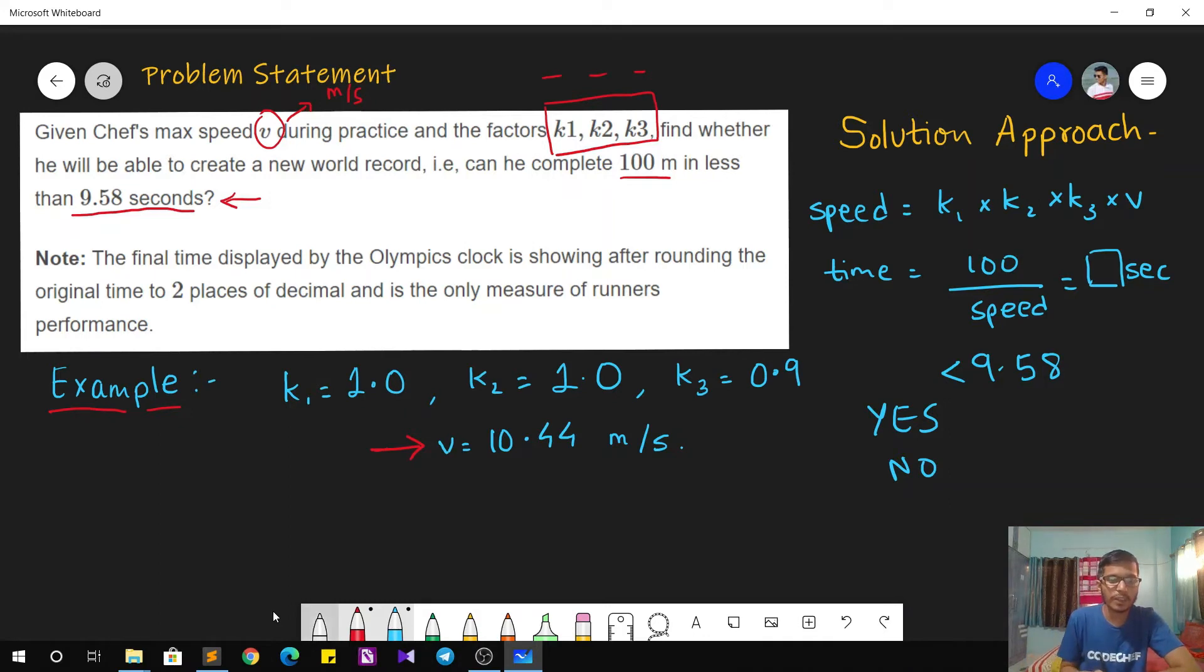So let's calculate the same for this test case. Over here we have K1 as 1, K2 as 1 and K3 as 0.9. So the speed in the actual race will be nothing but 1 into 1 into 0.9 into 10.44. If you calculate the same, it comes out to be 9.396 meters per second. But wait, that is only the speed.